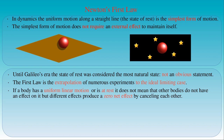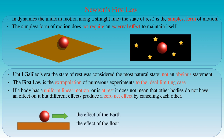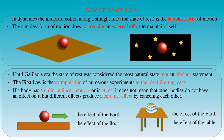If a body has uniform linear motion or is at rest, it does not necessarily mean that other bodies have no effect on it; different effects could produce a zero net effect by cancelling each other. Here we can see a ball rolling at constant speed on the floor. The effect of the earth on the ball is compensated by the effect of the floor, so the ball is not free-falling but rolling, keeping its initial velocity provided friction is negligible. Similarly, the effect of the earth on the books and the effect of the table cancel each other and the books remain in the state of rest.